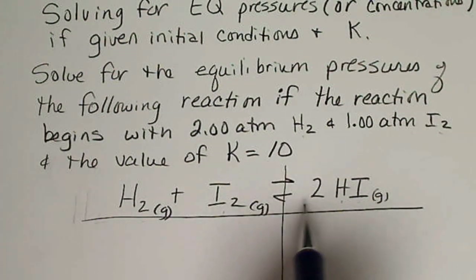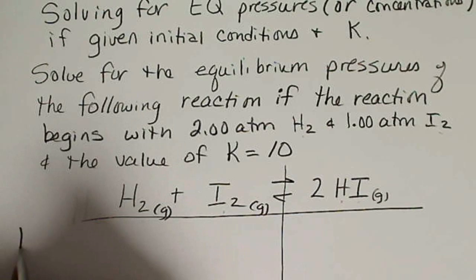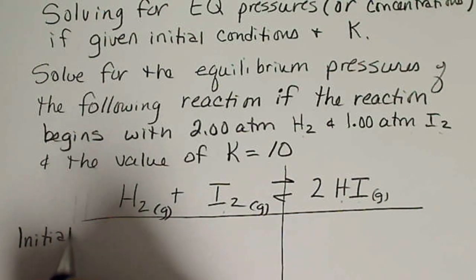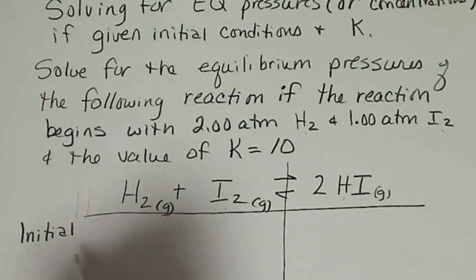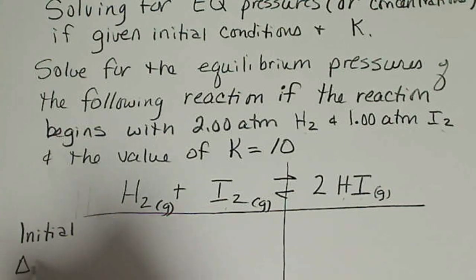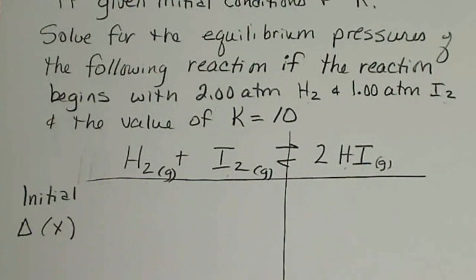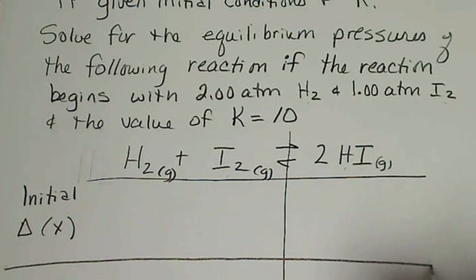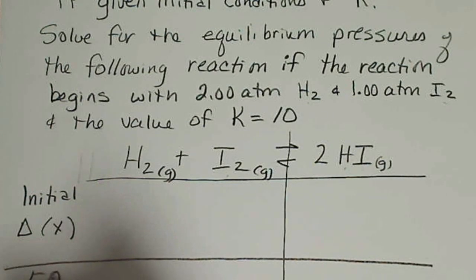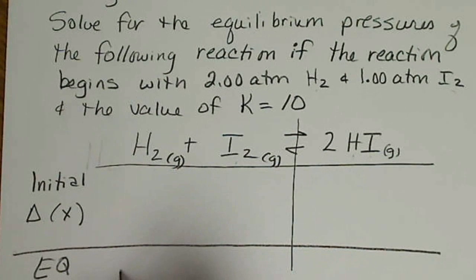So our table will have our initial conditions, and then the change is what we're going to call X. We'll end up solving for X, and then we'll end up with our equilibrium values down here.